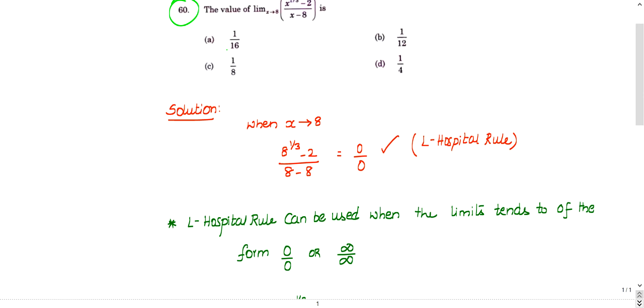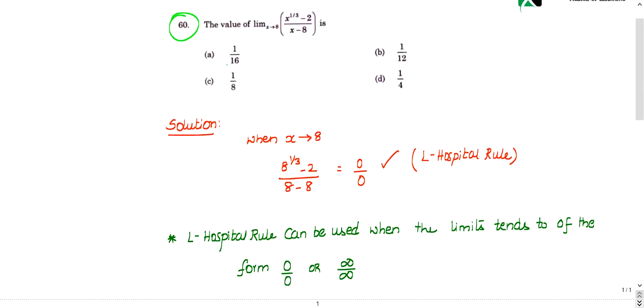So what is L'Hospital rule? How to apply? I'll explain to you. It is given that x tends to 8. So directly substitute x equal to 8 in this expression. 8 power 1 by 3 instead of x, I am writing 8 minus 2 divided by 8 minus 8. This yields to 0 by 0 form.